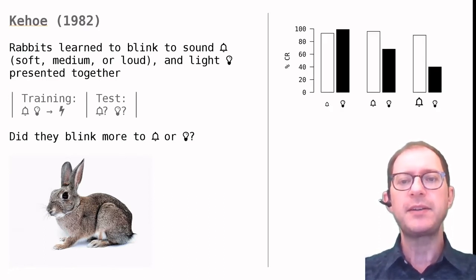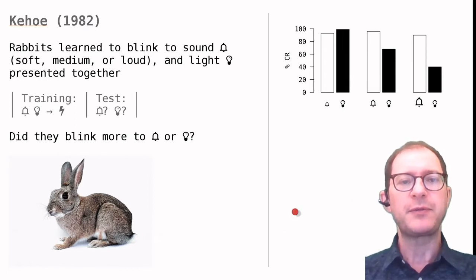The results are in this graph. Remember that there were three groups of rabbits. The white bars tell us how often they blinked when they heard the tone. The black bars, how often they blinked when they saw the light. Let's start from the left.